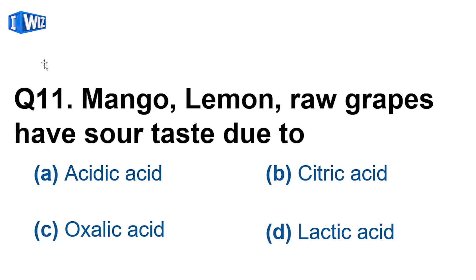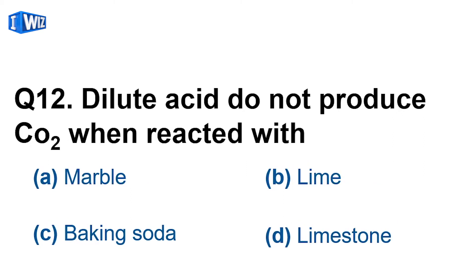Question number 11: mango, lemon, and raw grapes have a sour taste due to some acid present in them. What is the name of that acid? Lemon, raw grapes, and mango — they contain citric acid. These are citrus fruits, and the acid is citric acid.